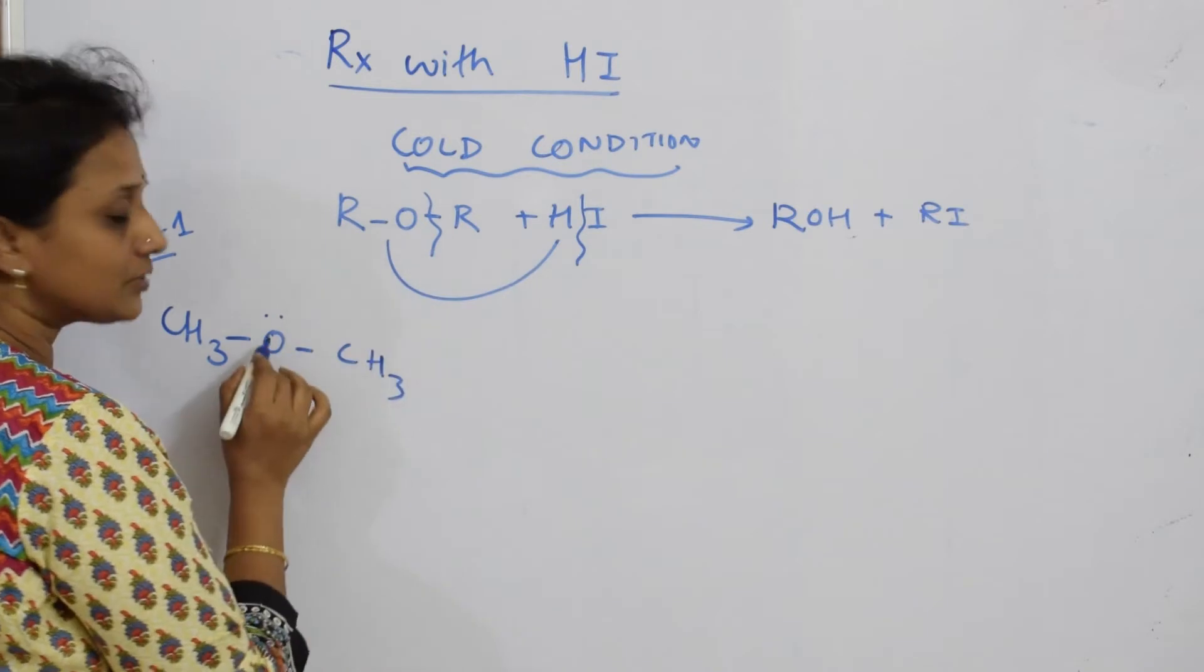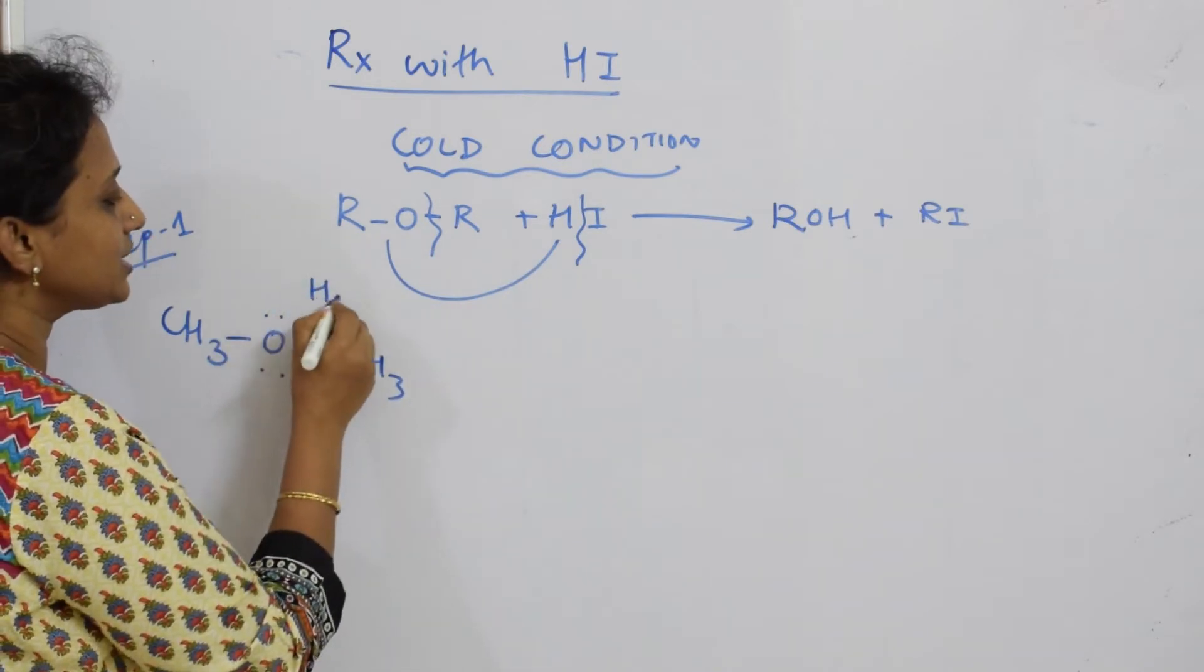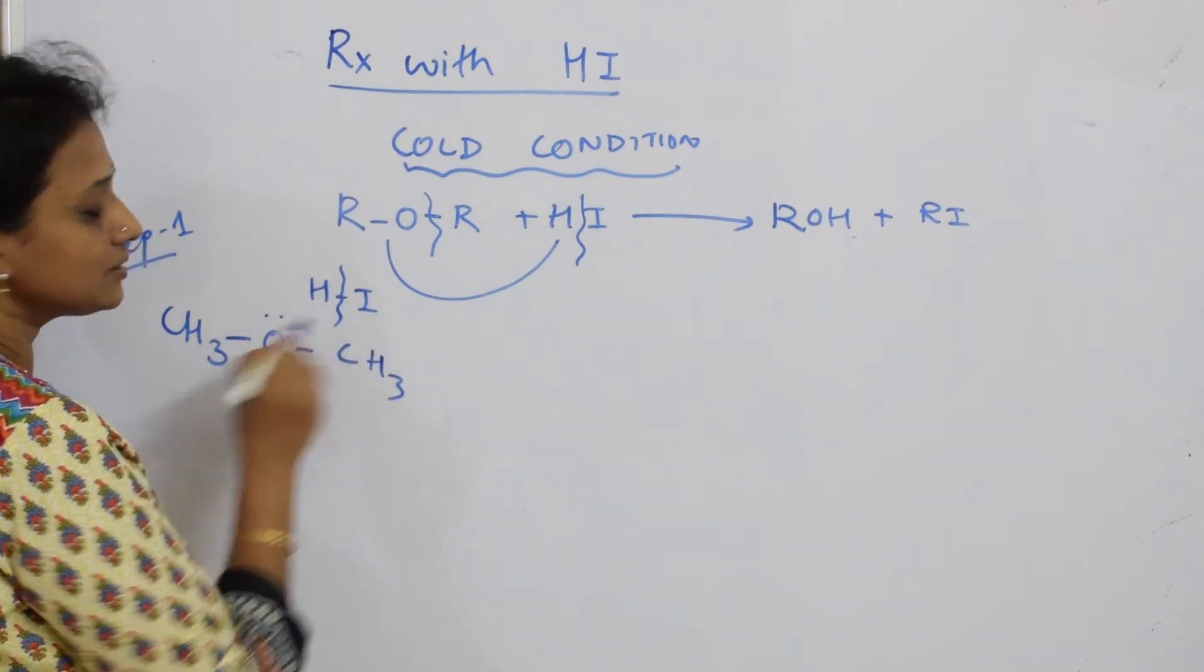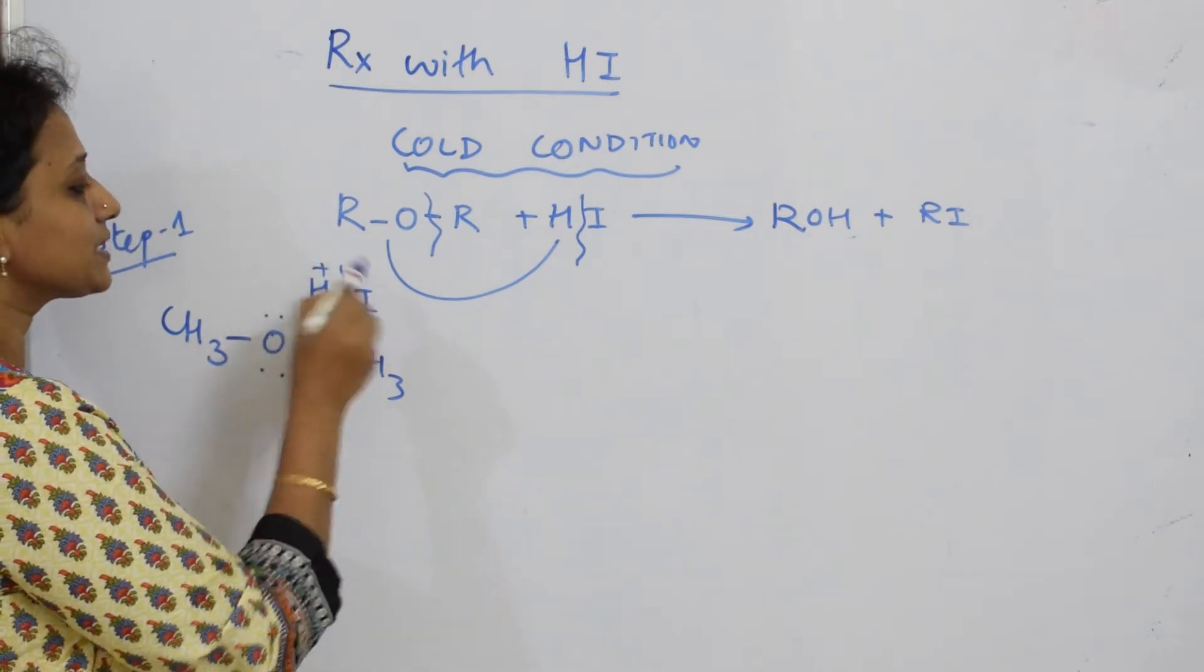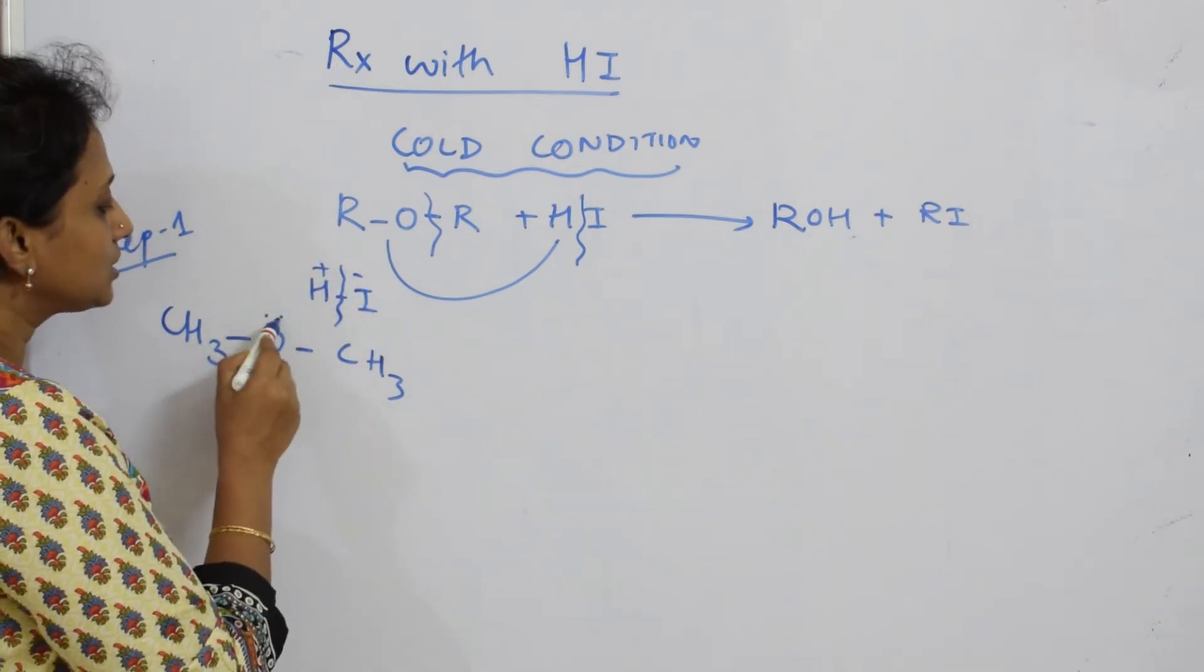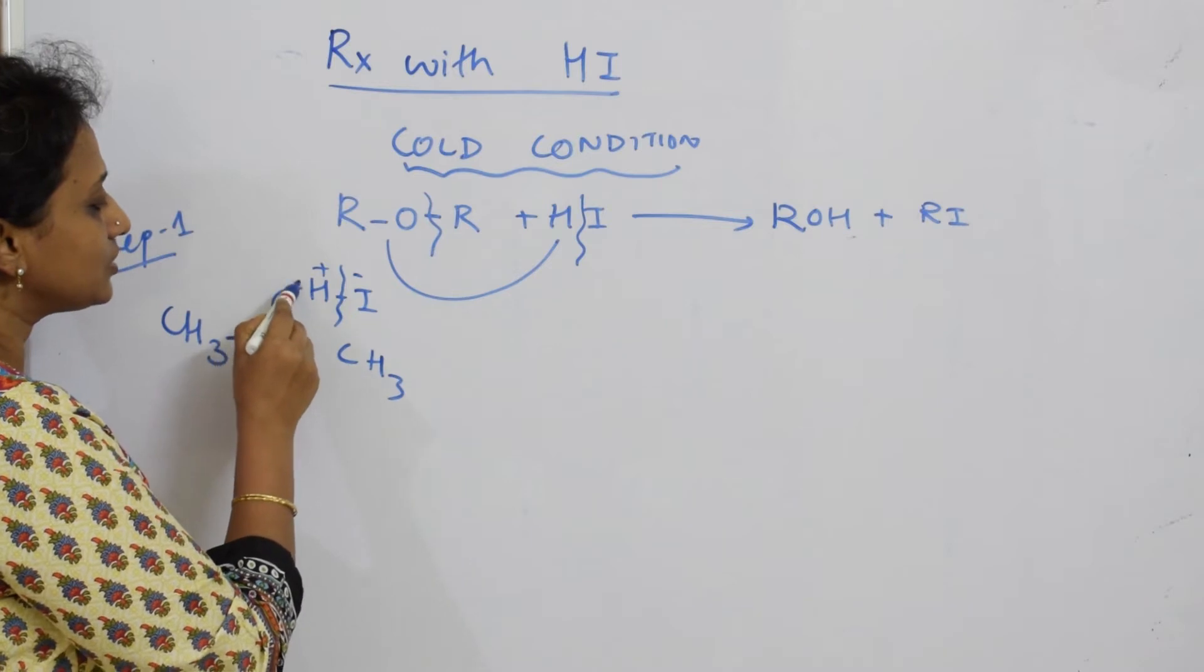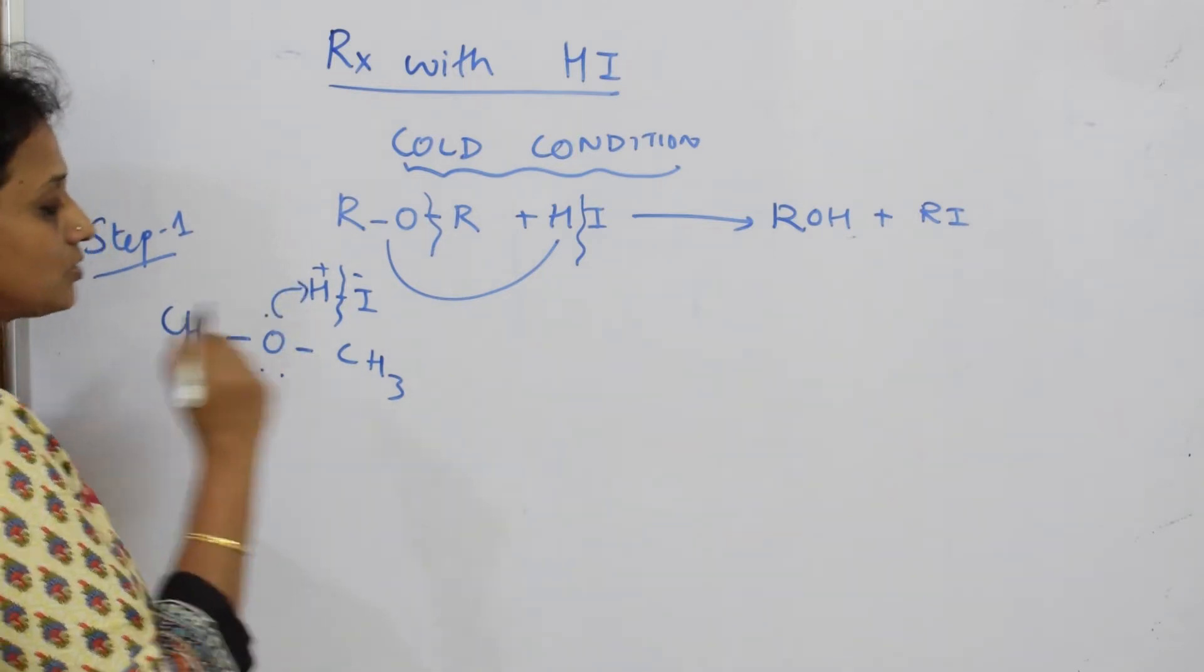So what happens? HI—well, first there is a cleavage of the bond. This becomes plus, this becomes minus. Now this pair of electrons is donated to this H.